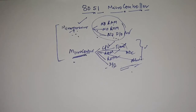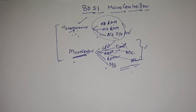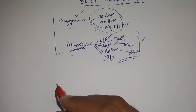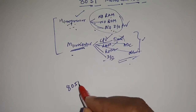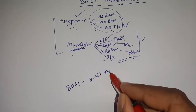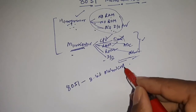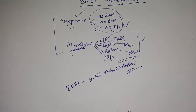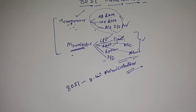We said that we will cover the 8051 microcontroller. There is also a family of 8051 microcontrollers. As you can see, the 8051 was introduced in 1981. This is the 8051 microcontroller. Basically, it is an 8-bit microcontroller, which means the CPU can work on only 8 bits of data at a time.